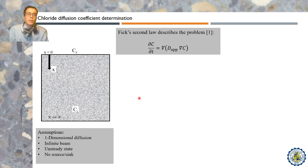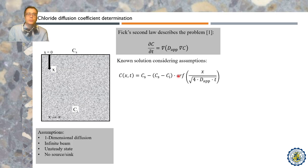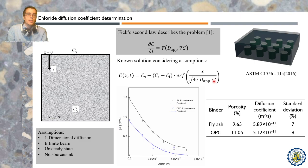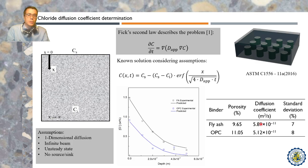To determine the diffusion coefficient, Fick's second law has been found to describe the problem. Solving the equation, the concentration profile through the beam can be described at any time or any position. In this equation, D_APP is the apparent diffusion coefficient that can be obtained indirectly. Following the standard ASTM C1556, the chloride concentration profile measured experimentally allows the calculation of the diffusion coefficient, with concentration of chlorides at different depths enabling the calculation for each binder.